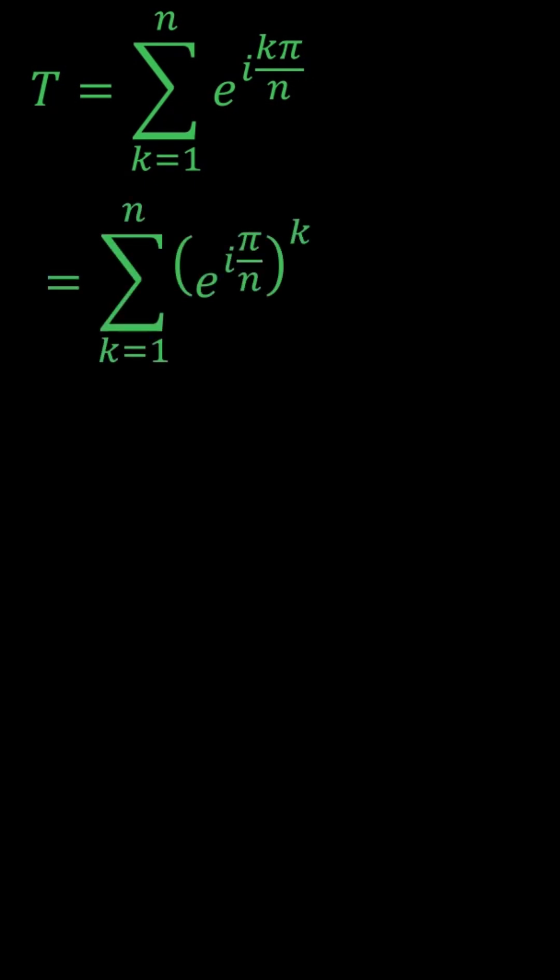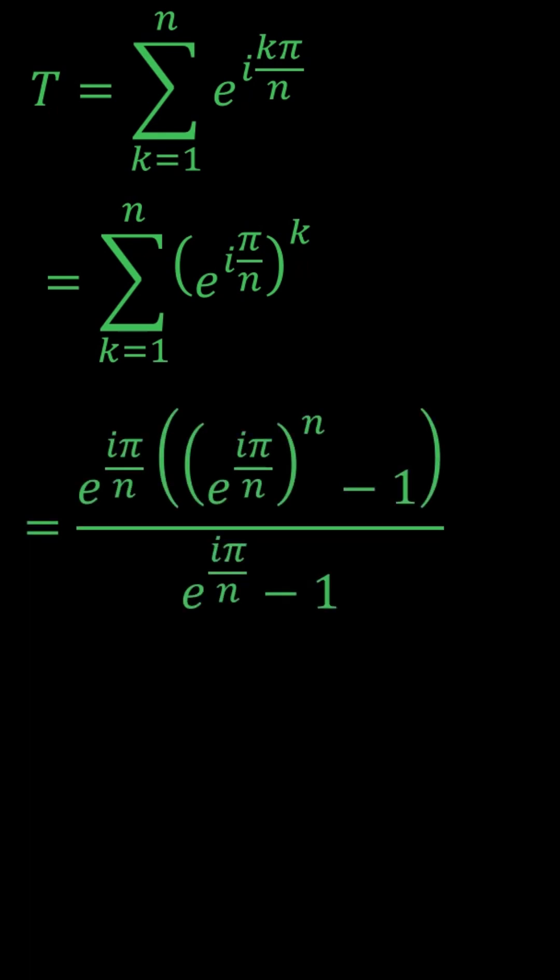We use a formula where the first term is e^(iπ/n), the common ratio is e^(iπ/n) as well, and there are n terms. Notice that e^(iπ) is just -1, so this simplifies.